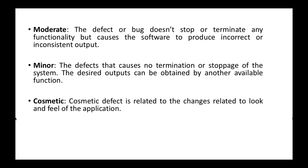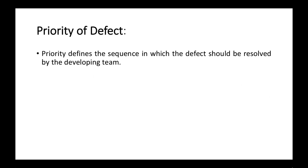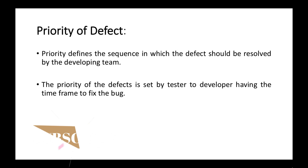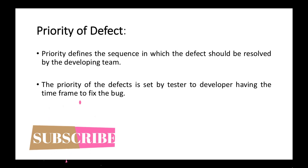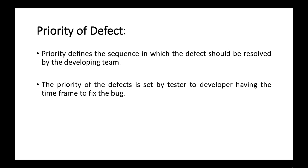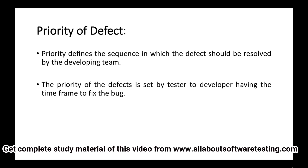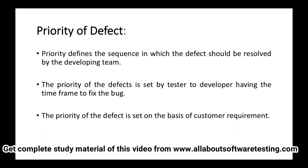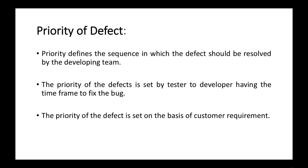Now we will study about the priority of defects. Priority defines the sequence in which a defect should be resolved by the development team. The priority of defects is set by the tester, giving the developer a timeframe to fix the bug. Priority is set on the basis of customer requirements — if the customer wants a defect fixed urgently, priority is set as high and the dev team fixes it first.